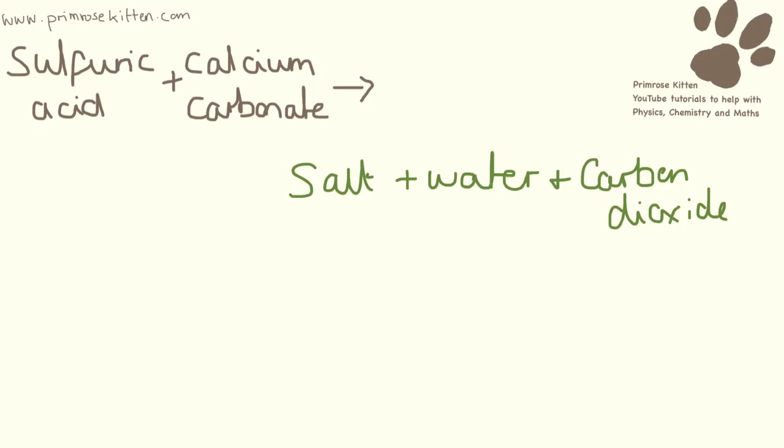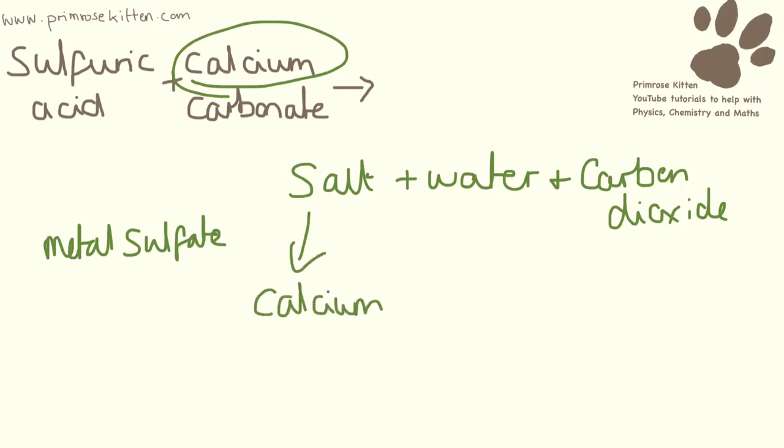We need to be able to name this salt. It is sulfuric acid this time, and sulfuric acid always produces a metal sulfate. So we can see the metal in this situation is again calcium, and because it's sulfuric acid, it's going to be calcium sulfate.